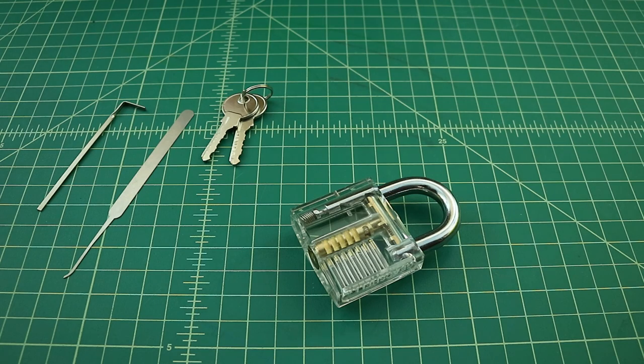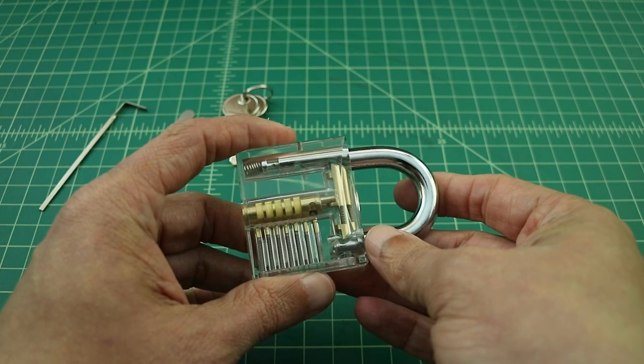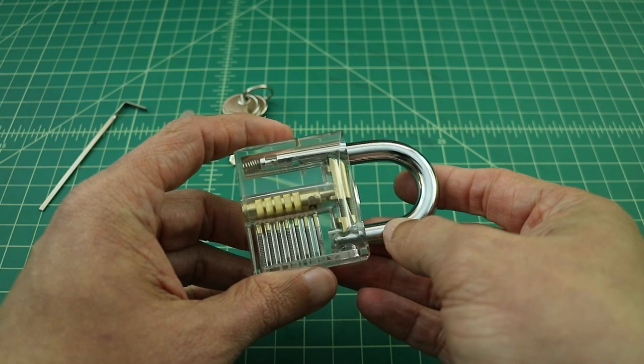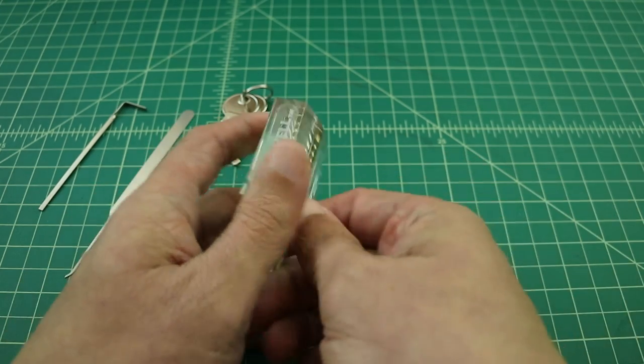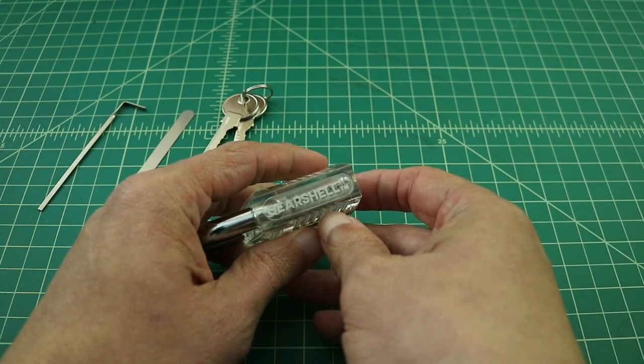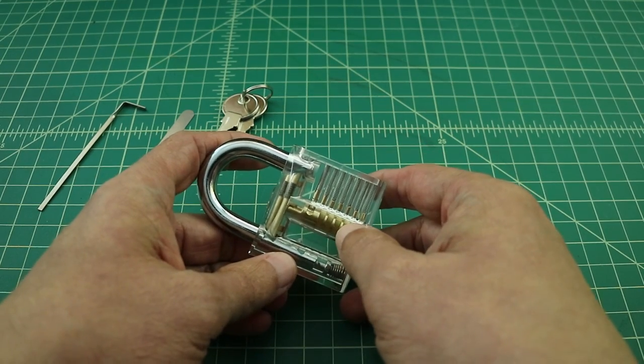Alright, so hopefully everybody made it back. For this video, what we're going to use is one of these see-through padlocks. You can get these on the internet for about $10, give or take, depending upon where you get them. This one happens to be branded as a gear shell, but it doesn't really matter. You'll see these with all kinds of different manufacturers' names on them.